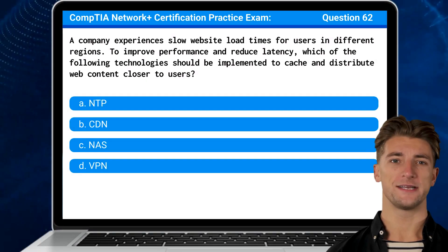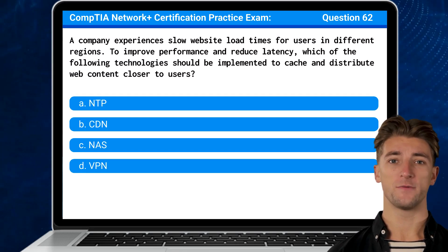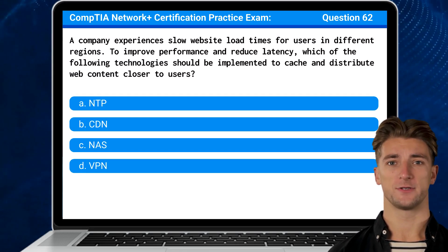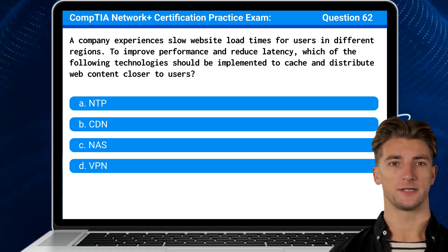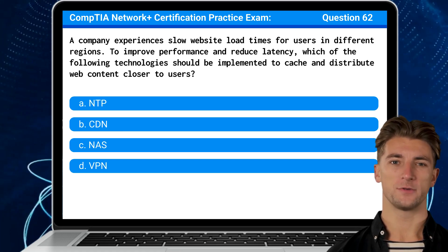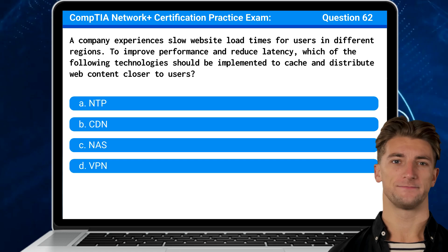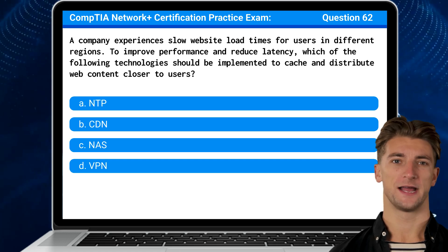Question 62. A company experiences slow website load times for users in different regions. To improve performance and reduce latency, which of the following technologies should be implemented to cache and distribute web content closer to users?